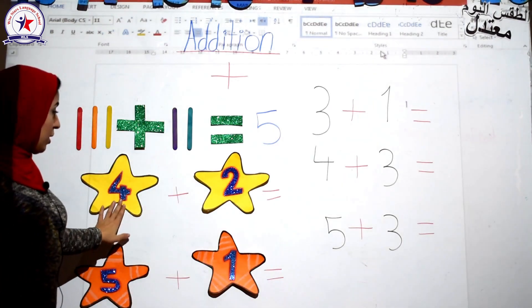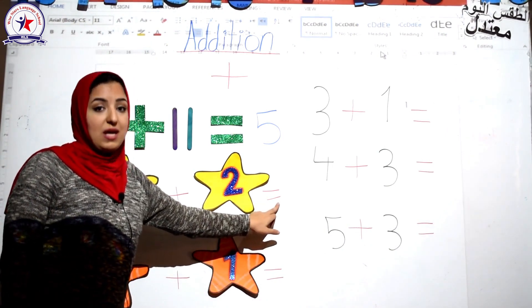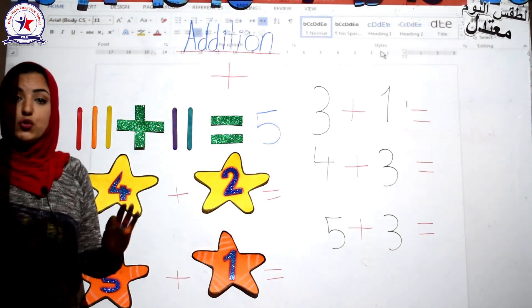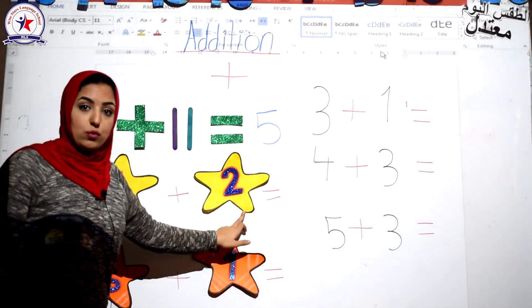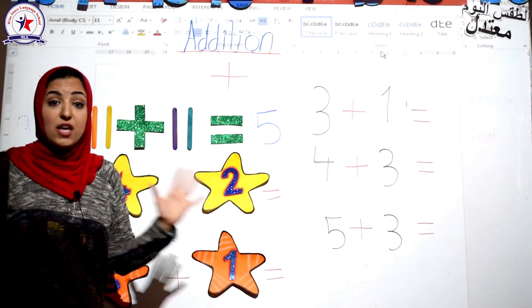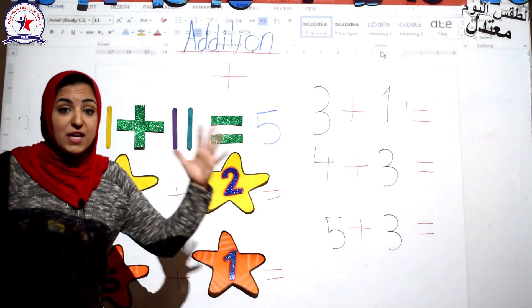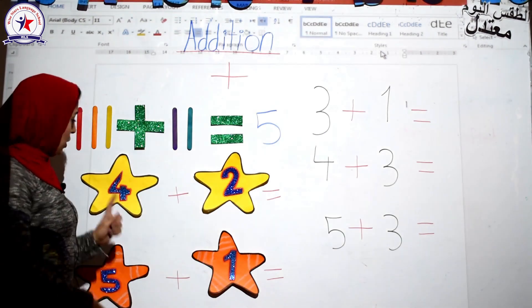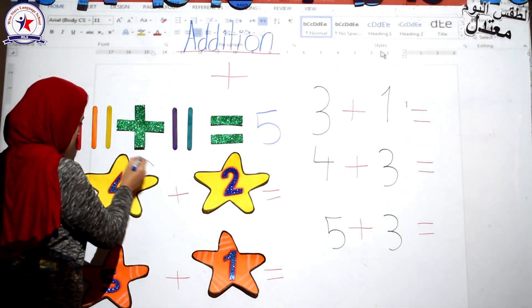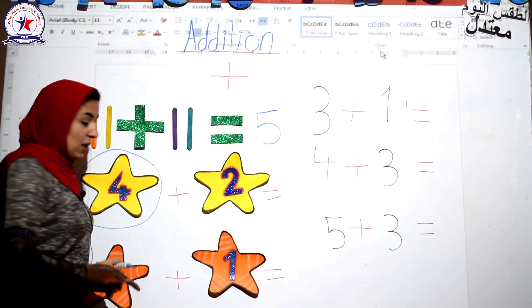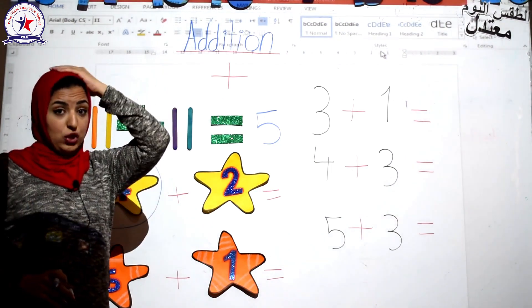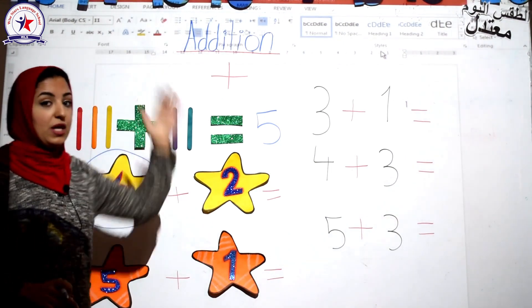I have four plus two and this mark is called equal. Four plus two equal what? You have to know which one is bigger, four or two. Circle the bigger number. Which one is bigger, Katie? Four or two? Of course, four is bigger than two. This is your head, so you have to put number four in your head.